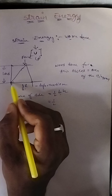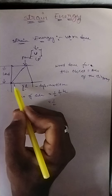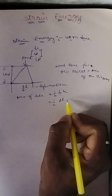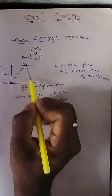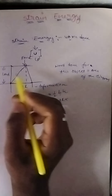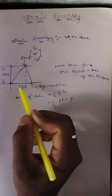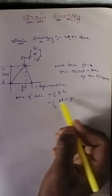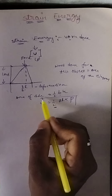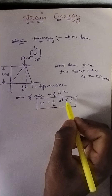Area of triangle equals half times b times h, where the base is delta-L and the height is P. So work done equals half times delta-L times P. Since strain energy equals work done, the formula for strain energy is: U = ½ × δL × P.